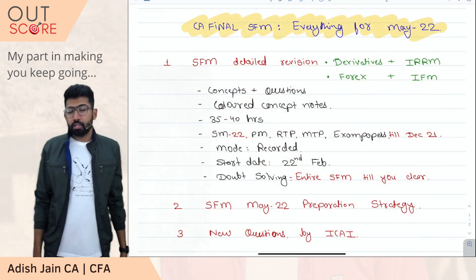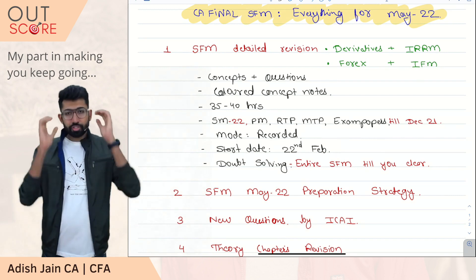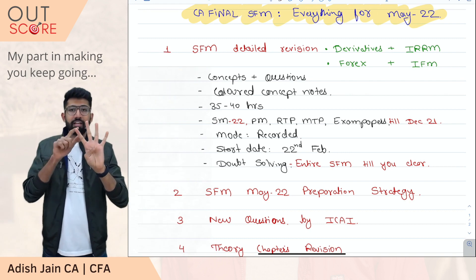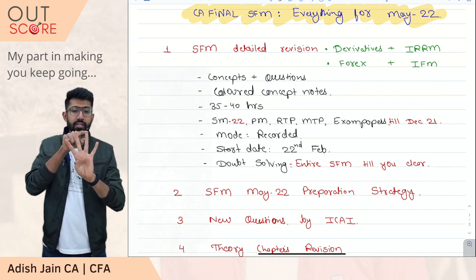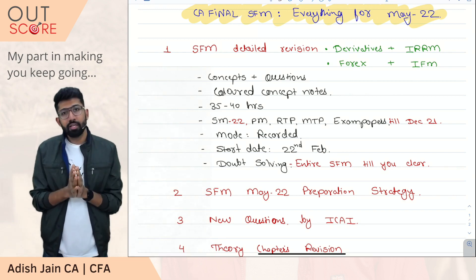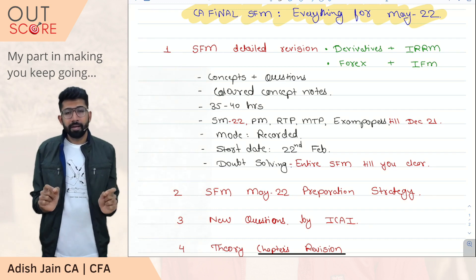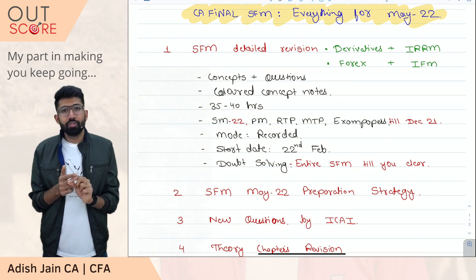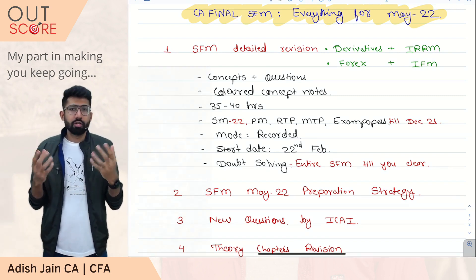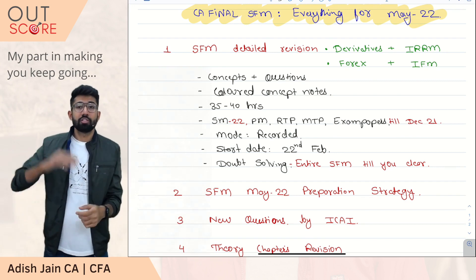First, talking about a detailed revision — or a quick fast-track batch — for the four most difficult subjects: derivatives, interest rate risk management, international financial management, and foreign exchange. All these four subjects are interlinked. I'm going to explain all the concepts and questions in detail, right from scratch till the exam level.